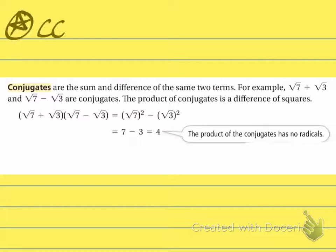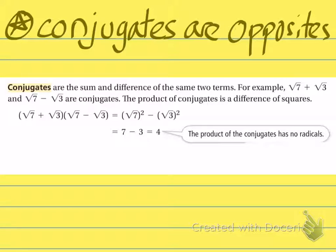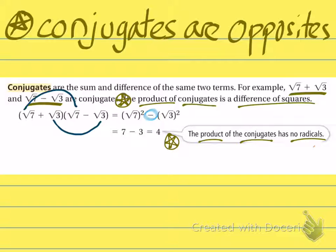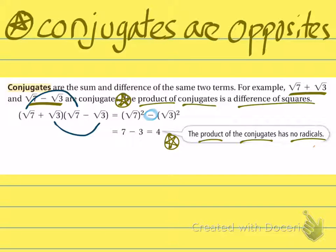Here's the last part of this section — conjugates. Conjugates are basically opposite binomials. For instance, radical 7 plus radical 3 and radical 7 minus radical 3 are conjugates. When you take two binomials that are conjugates and FOIL them together, the product is going to make all of the radicals go away. The product of conjugates will always be a difference of squares. When you multiply conjugates, the only terms you're multiplying are the first terms and the last terms — the middle terms will cancel out when you use FOIL.